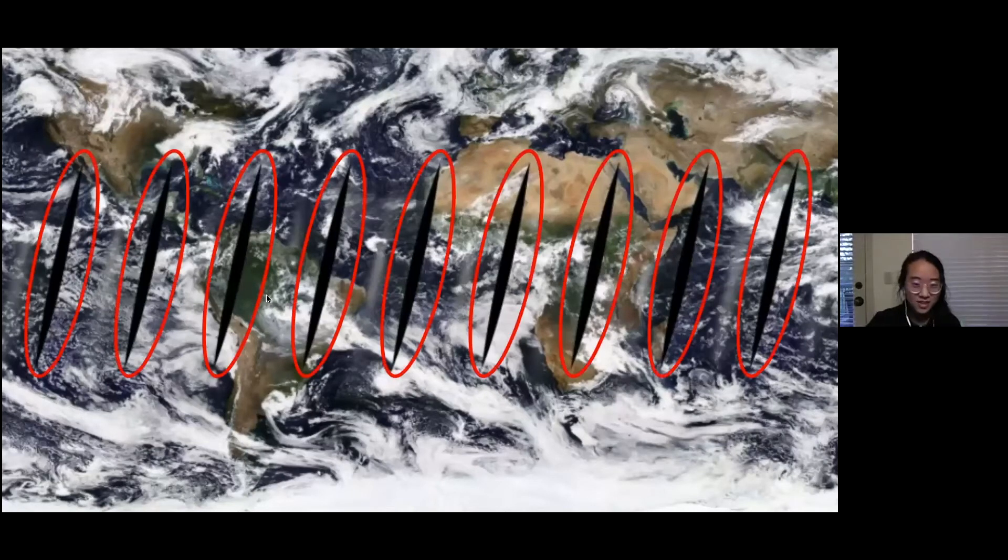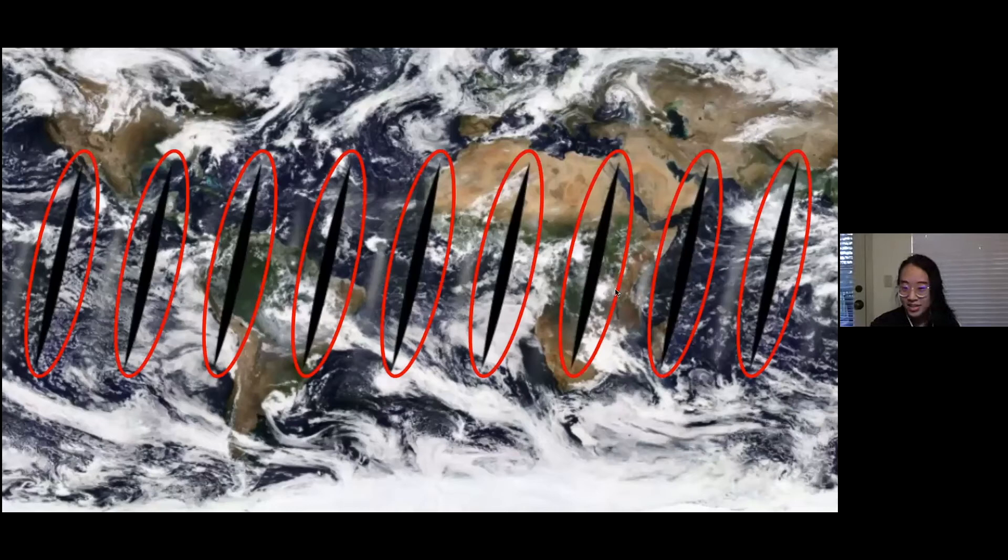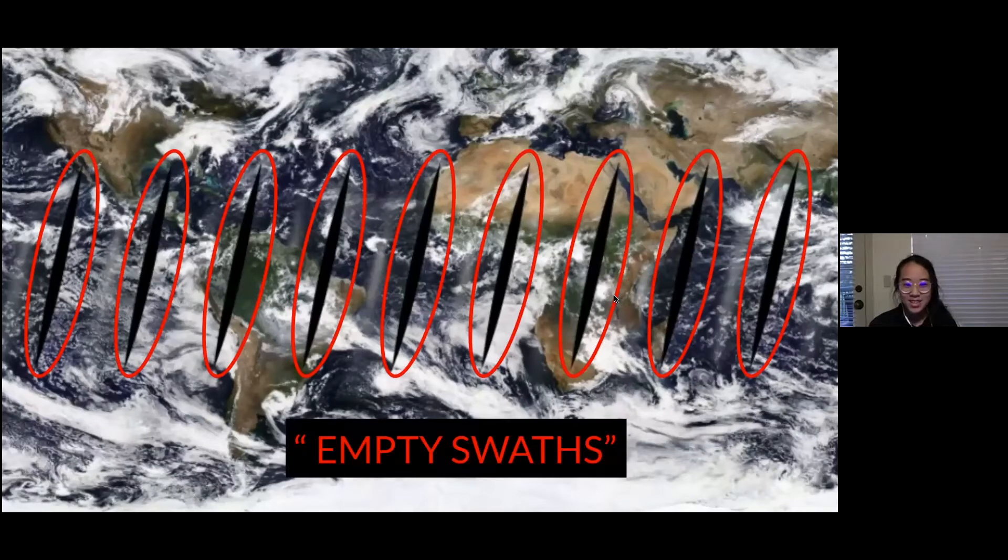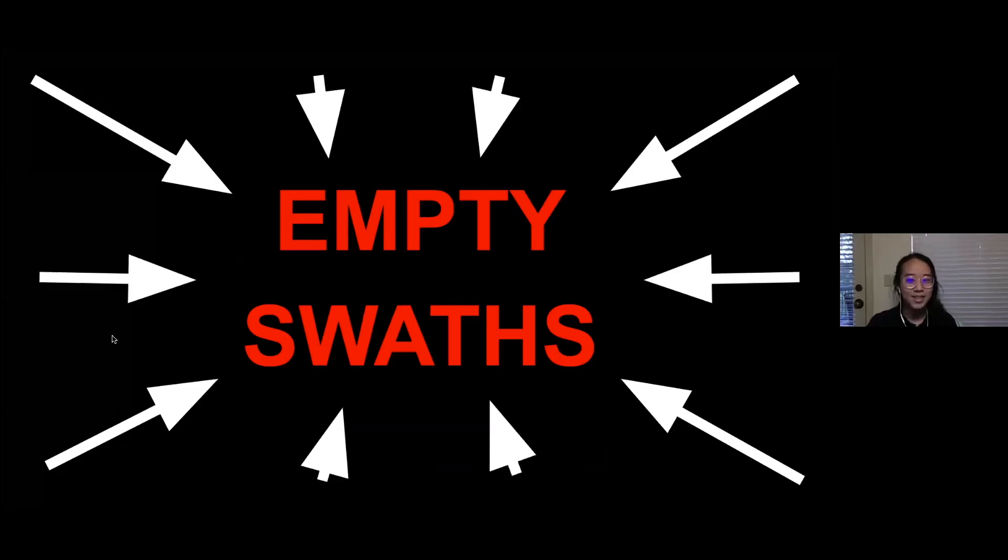These black splotches on Earth that you're currently seeing are actually called empty swaths. And these empty swaths are essentially regions of Earth that the WorldView satellites have not been able to capture just due to the nature of satellite movement. And at first, they seem quite small and unimportant. But if you ask any rambunctious five-year-old, they'll tell you small things are, in fact, important. And here's why.